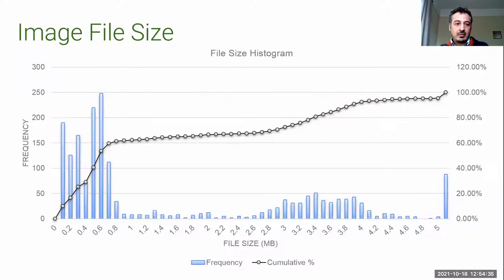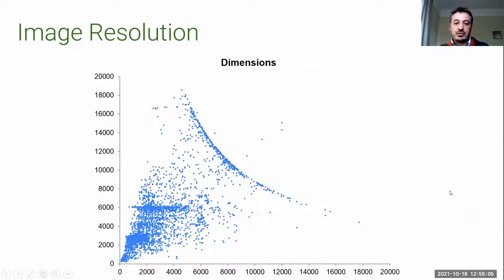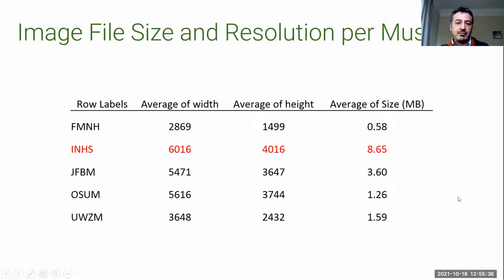Image file size graphs showed iDigBio images have two accumulation points — around less than one megabyte and three to four megabytes. For image resolutions, small size images show a particular distribution; however when file size or resolution is larger, they make a different curve because they are trying to keep file size low for high resolution images. The Great Lakes Invasive Network museum images all have similar characteristics within the same museum. Our neural network team enjoyed working with the INHS museum images the most — average size around 8 megabytes and 4,000 to 6,000 pixel dimensions.